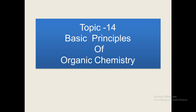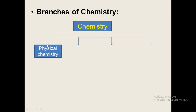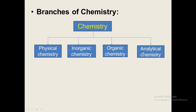So what is organic chemistry? We have seen branches of chemistry. Chemistry is broadly classified into four main branches. First branch is physical chemistry. Second branch is inorganic chemistry. Third branch is organic chemistry and fourth is analytical chemistry. So this topic comes from organic chemistry.